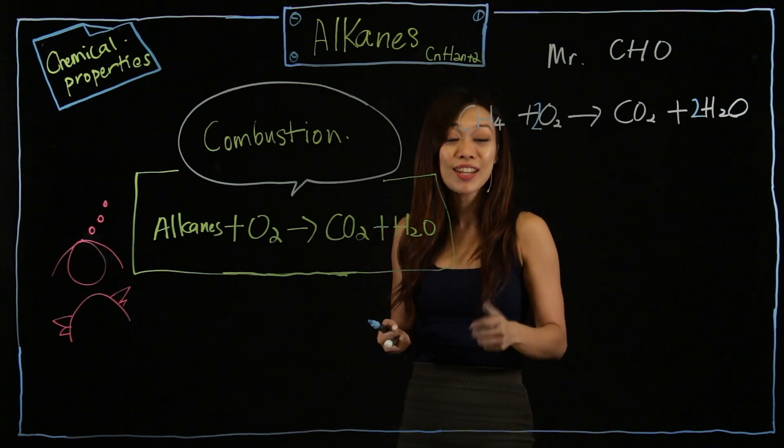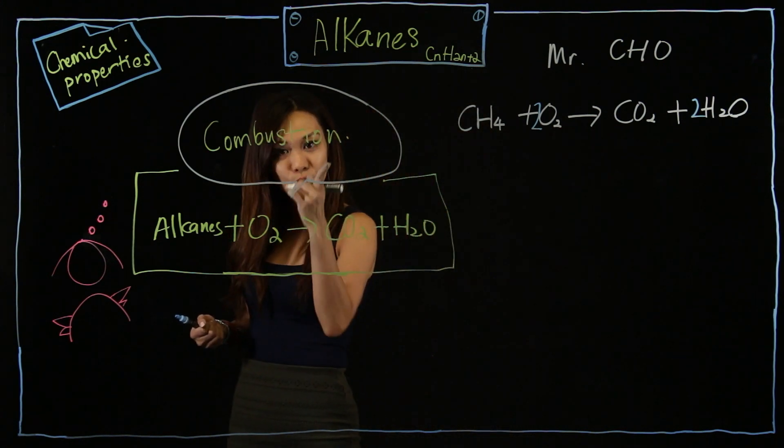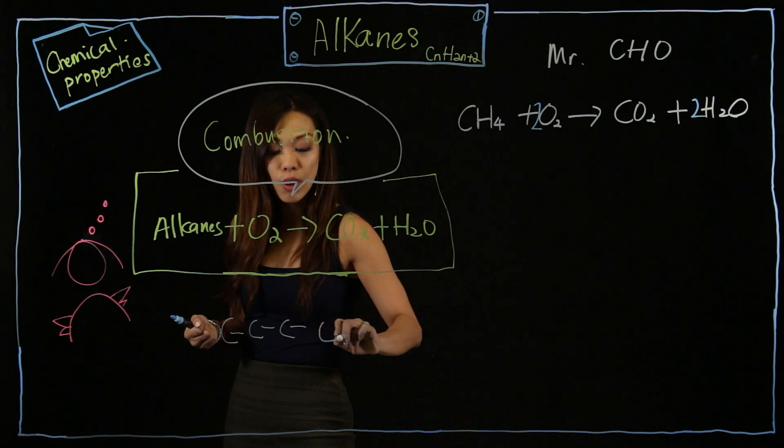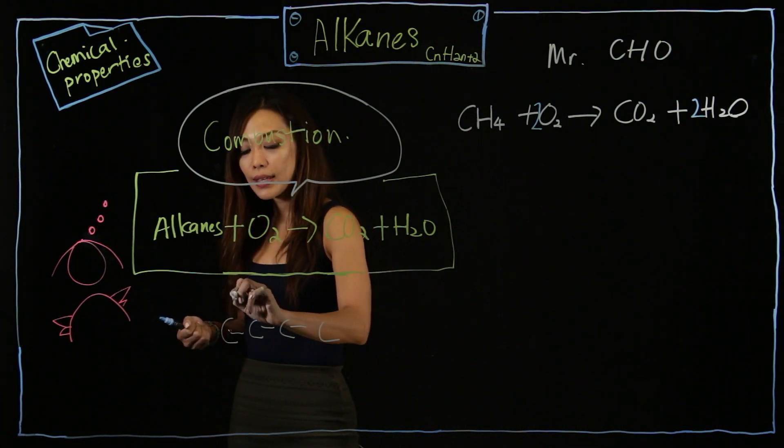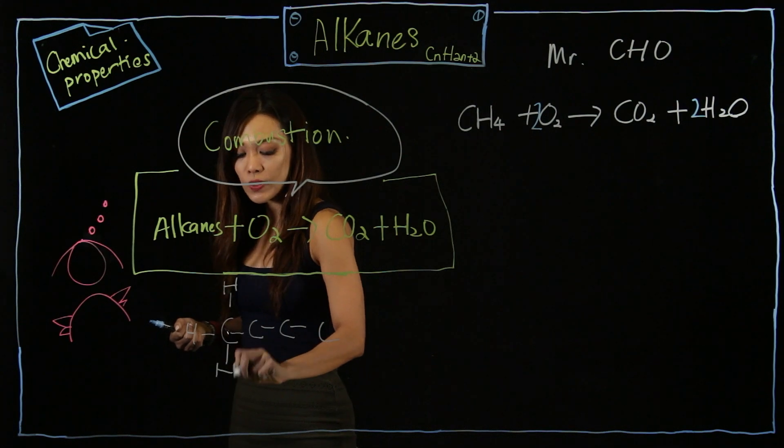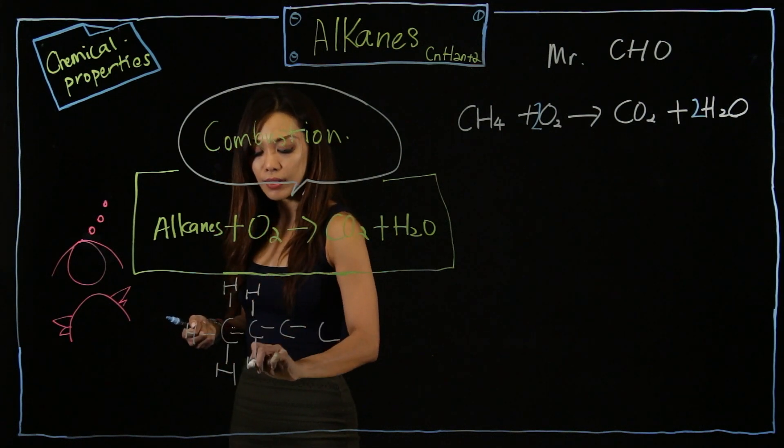Butane is how much? Monkey eat proper butter. I'm taking out the challenge. So as you watch, make sure you do it as well. Let's draw out a structure first. 1, 2, 3, 4. Same thing, each carbon got 4 electrons. And 1, 2, 3, 4. Let's draw out the lines.